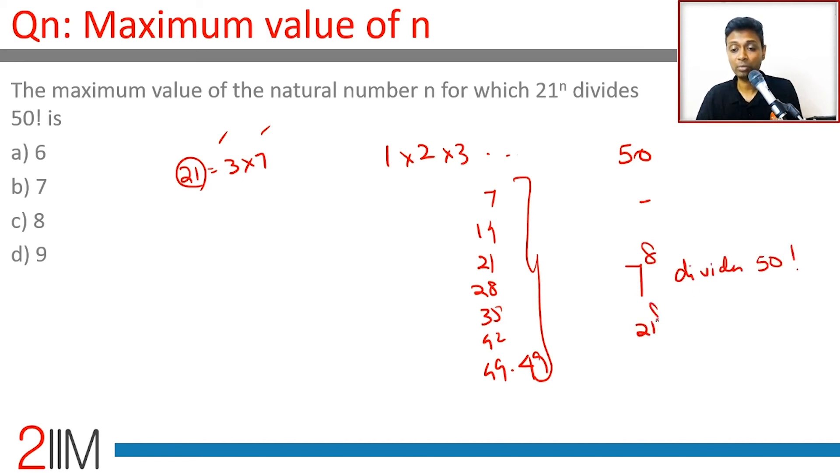Or 21^8 divides 50 factorial, because definitely more than 3^8 will divide 50 factorial. So the highest value of n such that 21^n divides 50 factorial is 8.